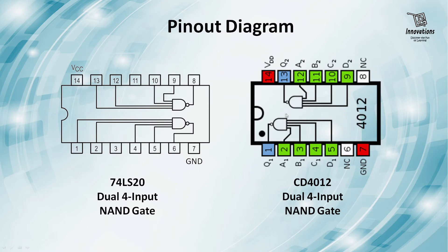For CD4012 the pinout diagram is different. Gate 1 input pins are 2, 3, 4, 5 and pin 1 is the output pin, pin number 6 is no connection, and pin number 7 is ground. For gate 2, pin numbers 9, 10, 11, 12 are input pins, pin number 13 is the output pin, pin number 8 is no connection, and pin number 14 is the positive power supply.